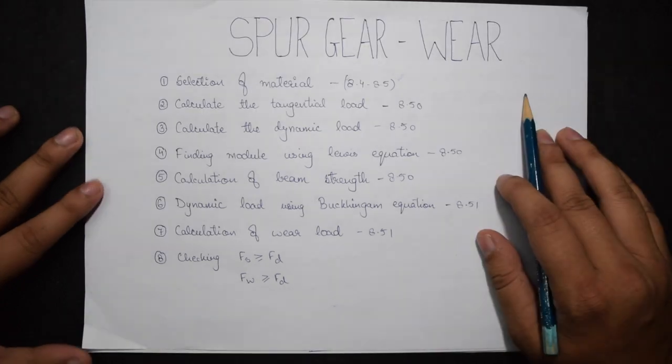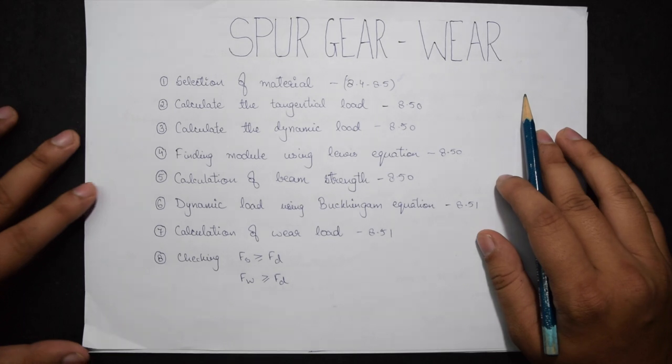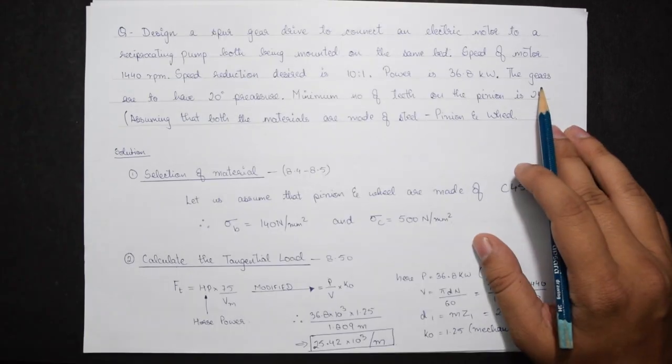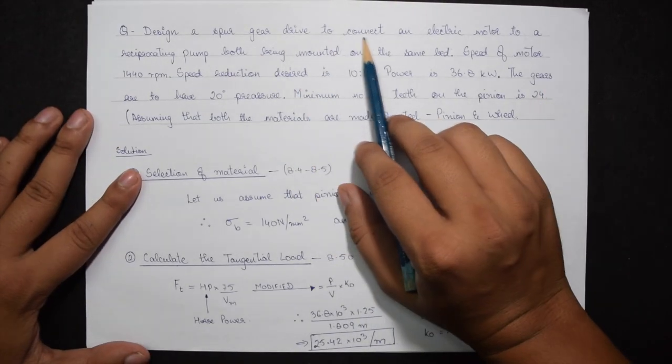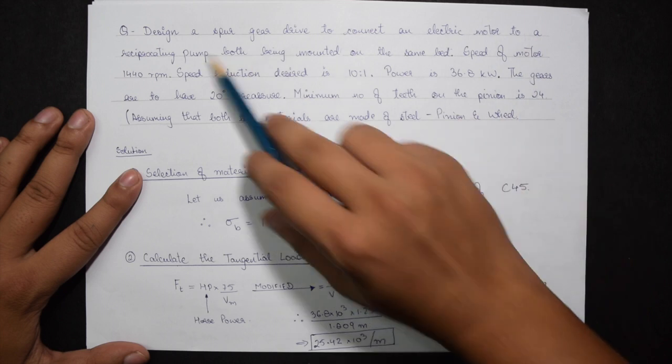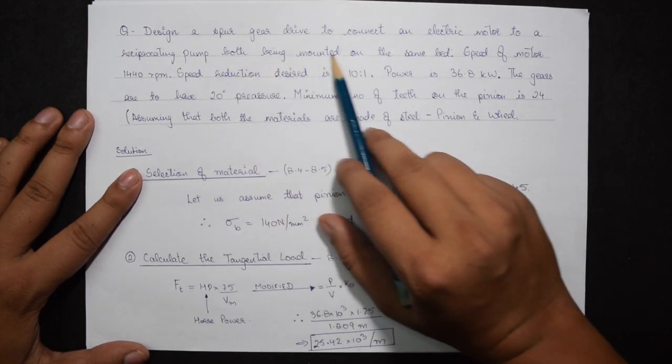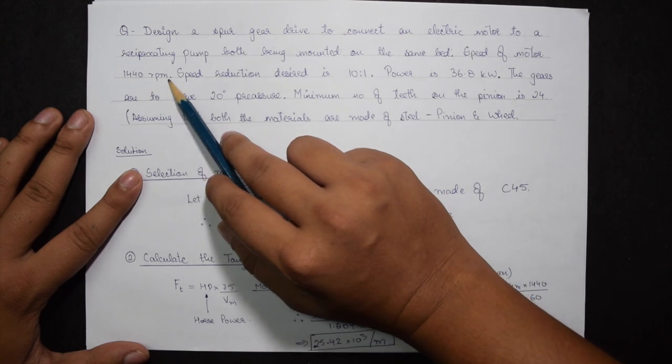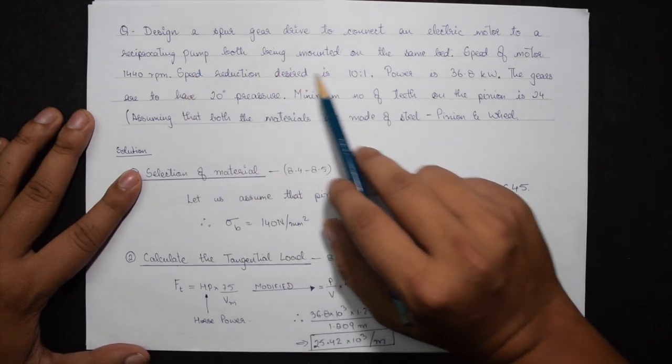I will be using the design data book compiled by PSG College of Technology. Let us directly jump to the question. We need to design a spur gear drive to connect an electric motor to a reciprocating pump, both being mounted on the same bed. Speed of the motor is 1440 rpm.